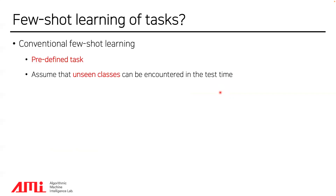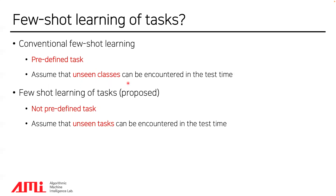So far, I introduced the conventional few-shot learning setup. The characteristics of conventional few-shot learning are as follows: they are performed on predefined tasks, and they assume that unseen classes can be encountered at test time. This figure explains the goal of this paper. This paper focuses on a novel few-shot task called few-shot learning of tasks, where there are no predefined tasks and unseen tasks can be encountered at test time.